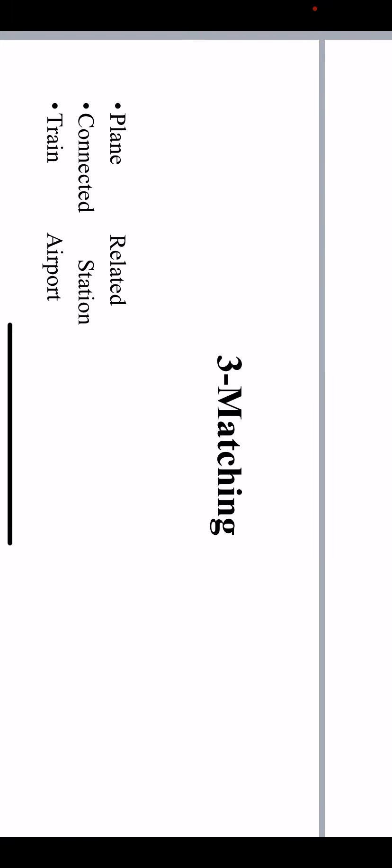Let's move on to the third type: matching. In matching exercises we have two columns — column A on the left and column B on the right. Here we have 'plane' and 'train,' two modes of transportation. We also have 'connected' and 'related,' and then 'station' and 'airport.' This creates a mixed matching situation where students will automatically link them. Instead, we should put all modes of transportation on the left side and where they stop on the right side.